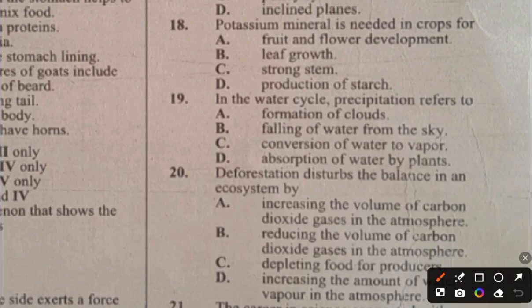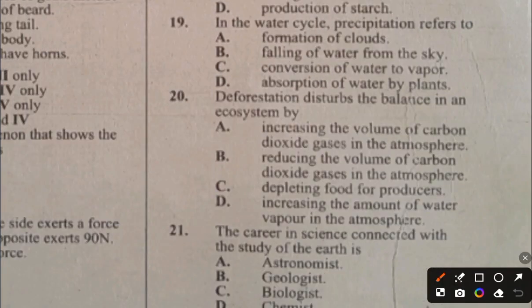Question 20. Deforestation disturbs the balance in an ecosystem by: A. Increasing the volume of carbon dioxide gases in the atmosphere, B. Reducing the volume of carbon dioxide gases in the atmosphere, C. Depleting food for producers, D. Increasing the amount of water vapor in the atmosphere. When trees are cut down, carbon dioxide is not used up, so carbon dioxide increases in the atmosphere. The answer to question 20 is A.